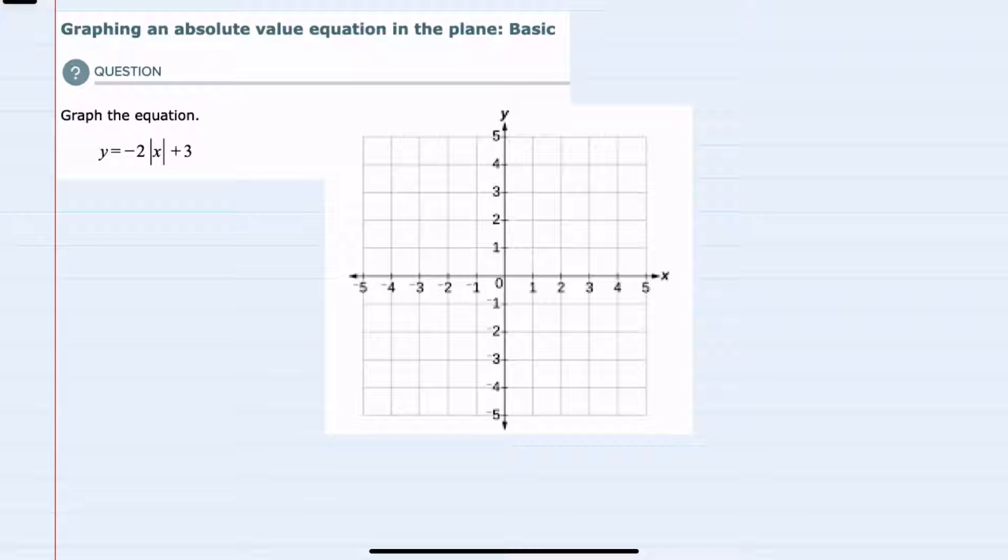In this video I'll be helping you with the ALEKS problem type called graphing an absolute value equation in the plane basic. We're asked to graph the equation y equals negative 2 times the absolute value of x plus 3.